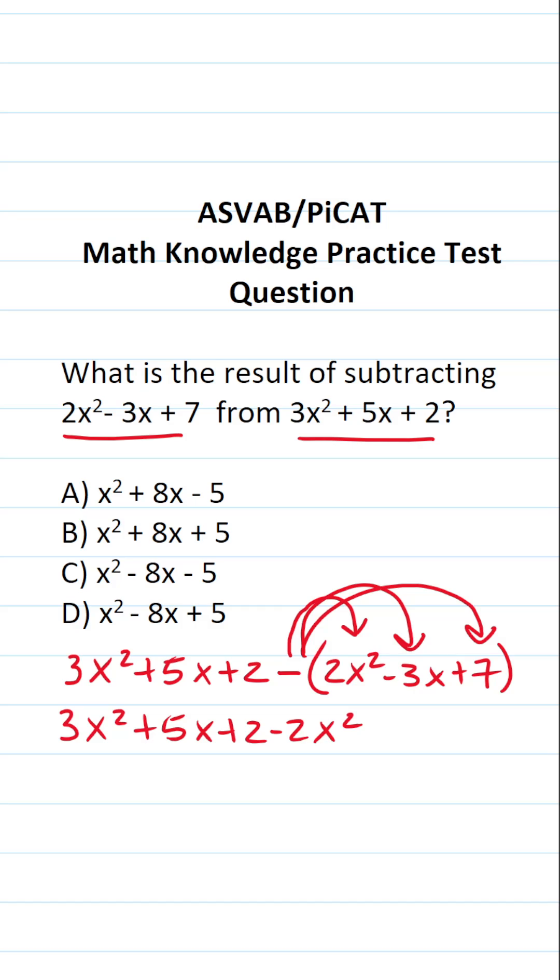Negative times positive 2x² is negative 2x². Negative times negative 3x, a negative times a negative is going to be positive 3x. Negative times positive 7 is going to be negative 7.